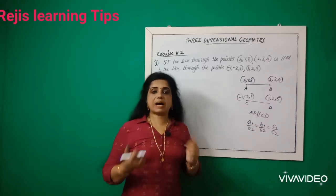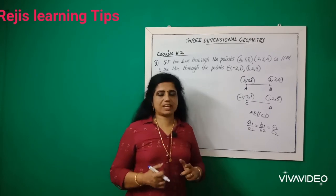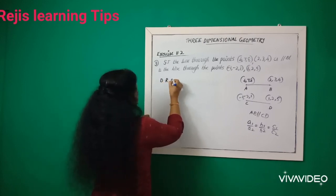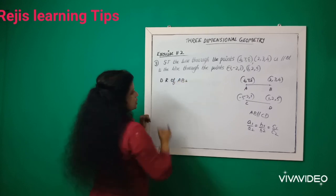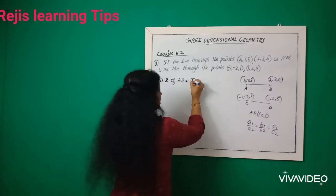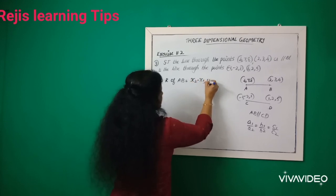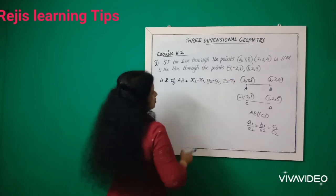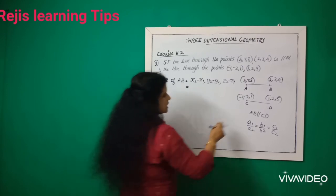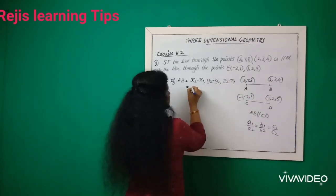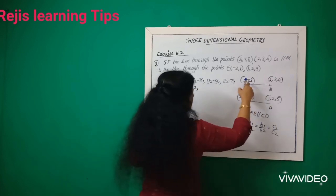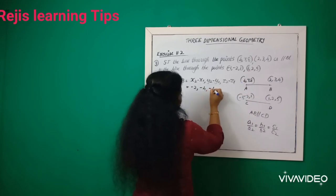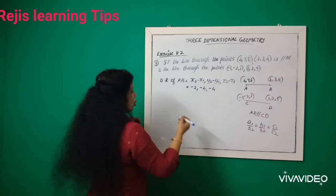To prove AB and CD are parallel, we are going to find direction ratios. First, direction ratios of AB. That is equal to x2 minus x1, so 2 minus 4 means that is -2. Then 3 minus 7, that is -4. And 4 minus 8, that is -4. These are the direction ratios of AB.